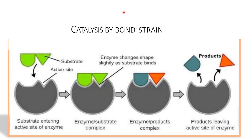Catalysis by bond strain is mostly carried out by lyases. Here, the enzyme-substrate binding causes reorientation of the structure of the active site due to strain conditions. This transitional state is required, and the bond becomes unstable and is eventually broken. In this way, the bond between the substrate molecules is broken and the substrate is converted into a product.